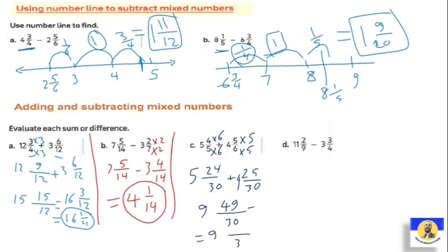We need to simplify forty-nine over thirty: forty-nine divided by thirty is one with nineteen remainder, so that's one and nineteen over thirty. Adding to nine: nine plus one is ten. So the final answer is ten and nineteen over thirty.